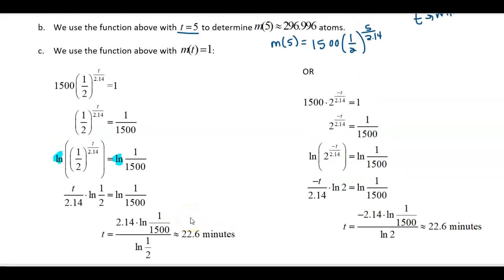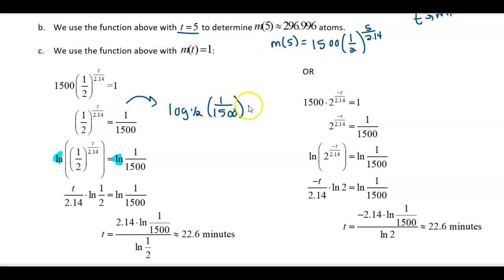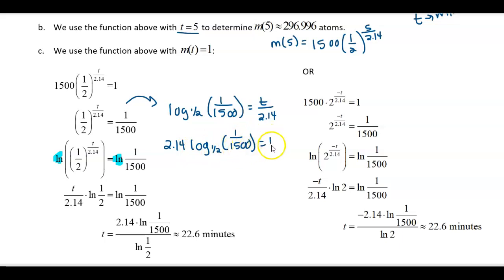Another strategy: change to logarithm form. Write logarithm base one-half of 1 over 1500 equals t over 2.14 — remember the base stays the same. Then multiply by 2.14 to solve for t. Put this into your calculator and you get the same answer of approximately 22.6. Both methods give the correct answer, so use whichever makes more sense to you.